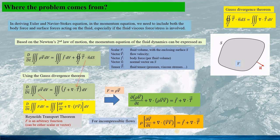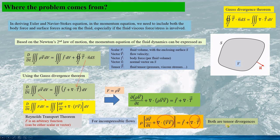For incompressible flows, we can write the equation in this form. Here we can see that the double vector V and capital T are both tensors, and these terms are the tensor divergences.